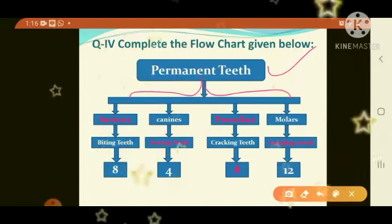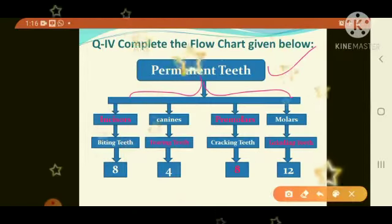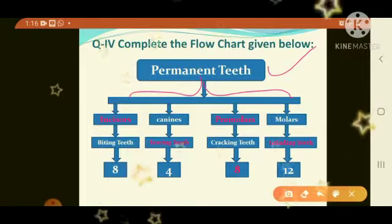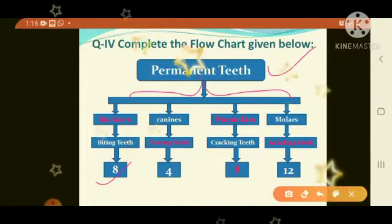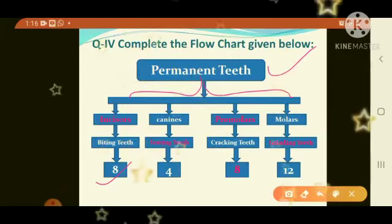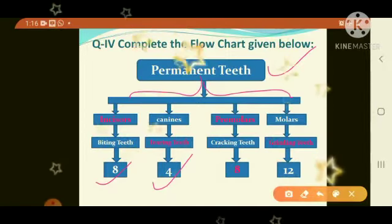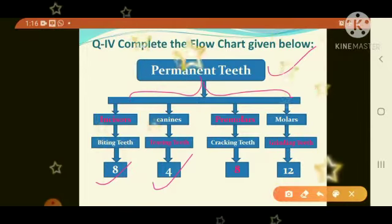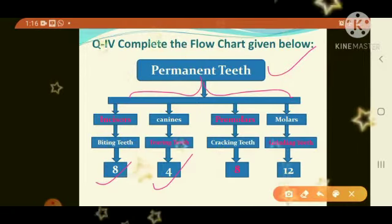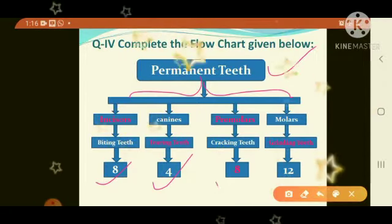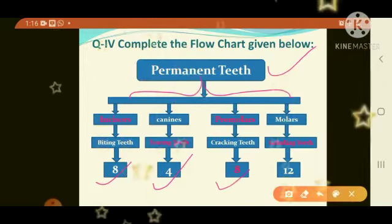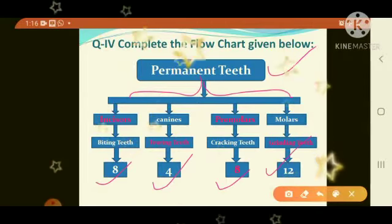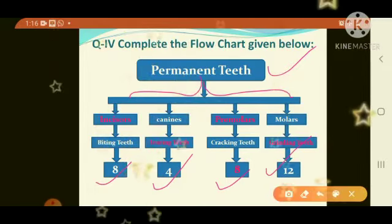Incisors total: eight. Canines total: four teeth. Premolars: eight. Molars: twelve.